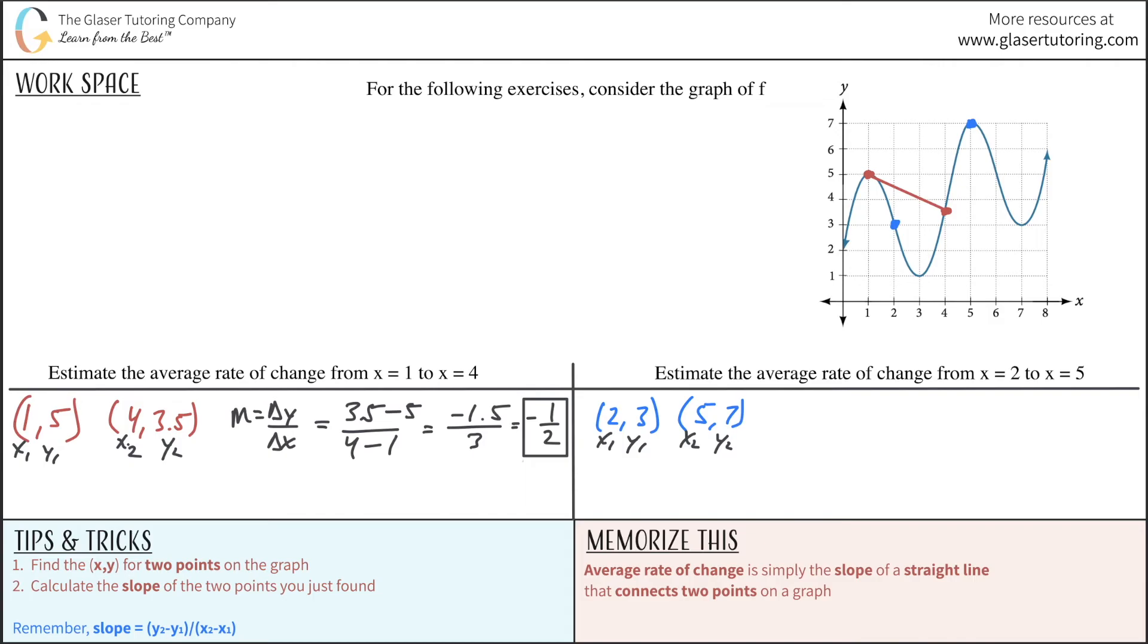You don't even need to draw the line necessarily, but I'm going to draw it anyway. So all we now need to do is find the slope of this line that connects those two points that will represent the average rate of change. So the slope will be equal to y2, which is seven, minus y1, which is three, all over x2, which is five, minus x1, which is two. So this works out to be four over three.